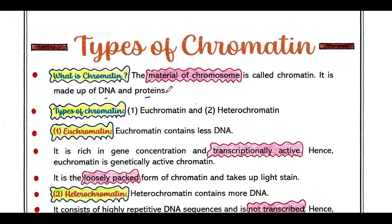Now there are two types of chromatin: euchromatin and heterochromatin.